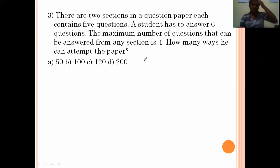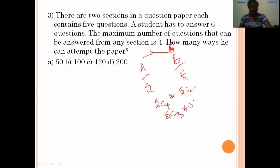There are two sections in your first paper. Each contains five questions. A student has to answer six questions. The maximum number of questions that can be answered from any section is four. How many ways can he attend the paper? Section A has five questions. Section B has five questions. From these two, the student will attempt totally six. From each section, at any section, he wrote maximum four questions.